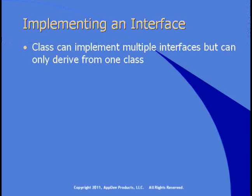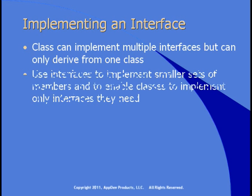If you create an abstract class and inherit from it, that's the only class you can inherit from and you get everything that's in the class. Whereas an interface will typically contain a smaller number of properties and methods. Because you can implement multiple interfaces in a class, an interface winds up being a good way to group smaller sets of related members. In your classes you can implement only the interfaces you need.